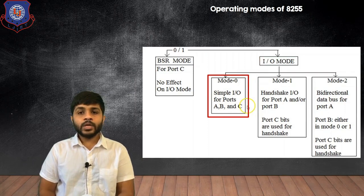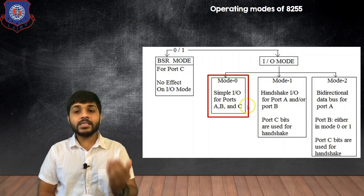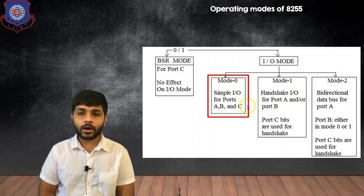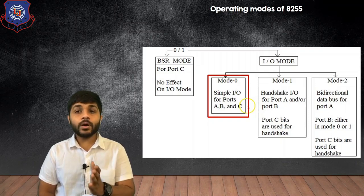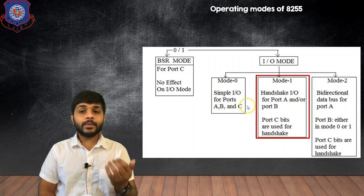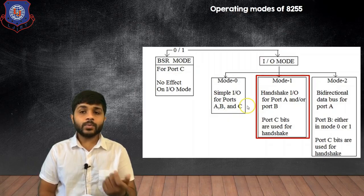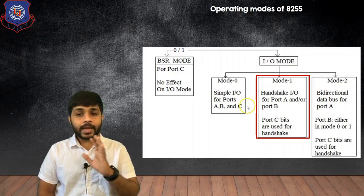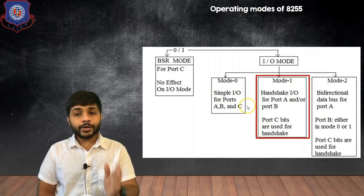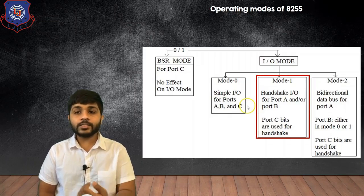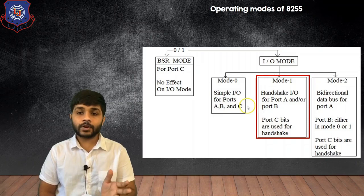When the 8255A is set to work in Mode 0, all the ports can be set as either input or output — Port A, Port B, or Port C. If the 8255A is set to work in Mode 1, Port A and Port B can be set as input or output, and Port C will be used as handshake. Handshake means when any peripheral device is connected to the 8255A, it will initialize the communication using handshake signals. Once the handshake and initialization are done, data can be transferred between the 8255A and the peripheral device. Port C is used for this handshake.